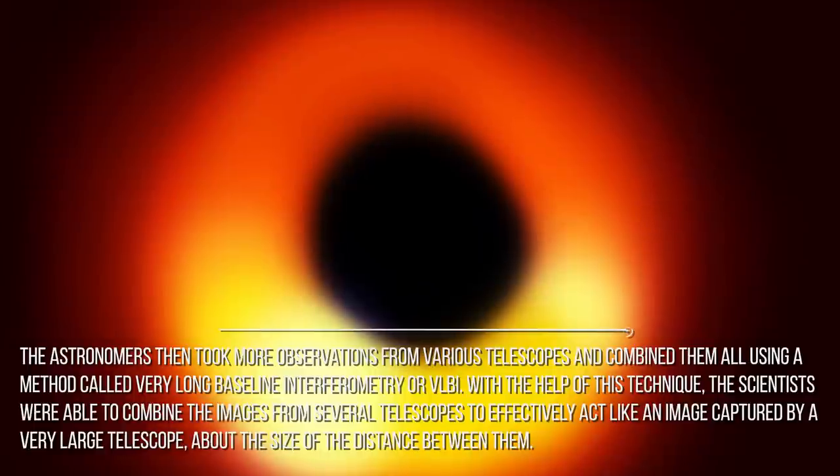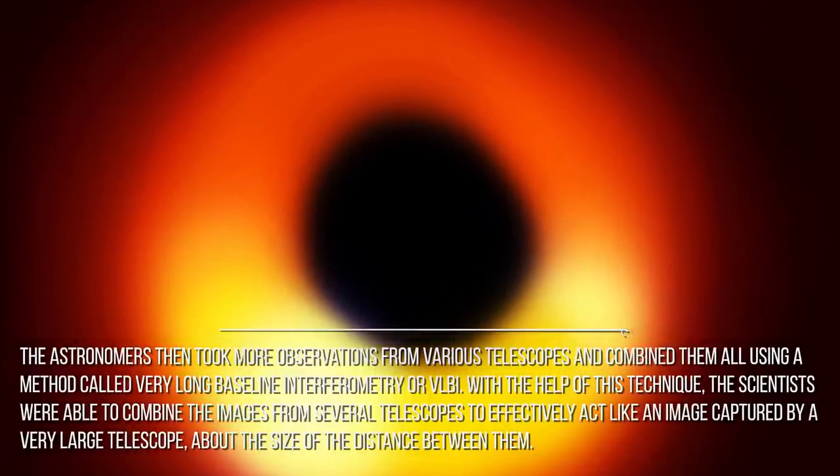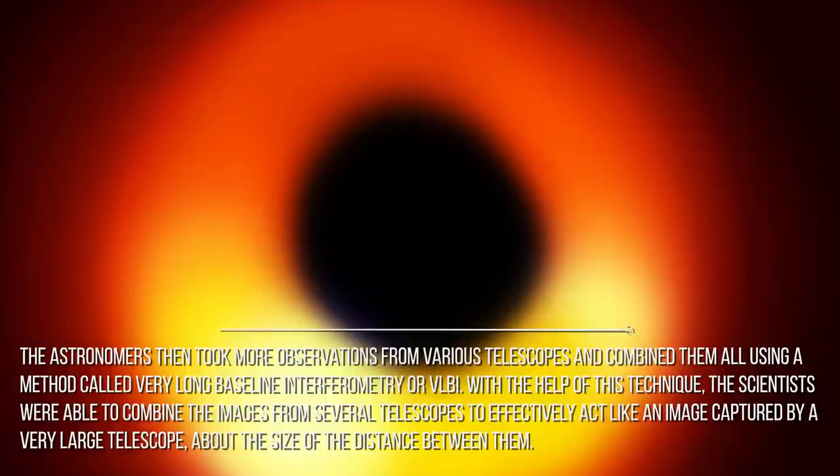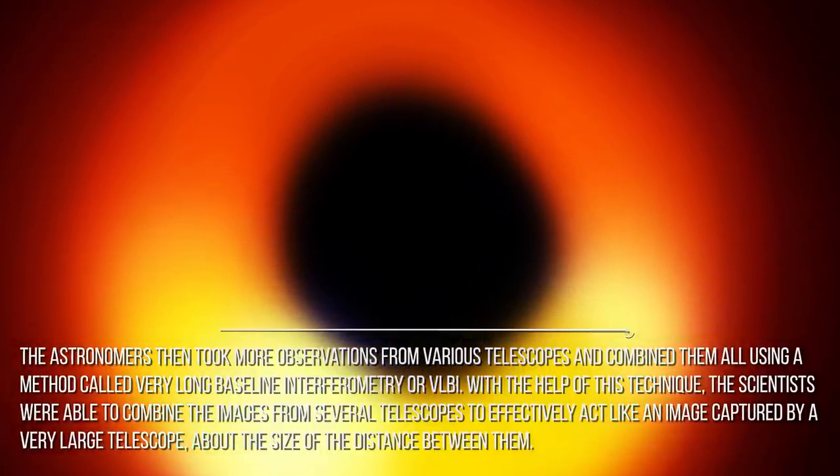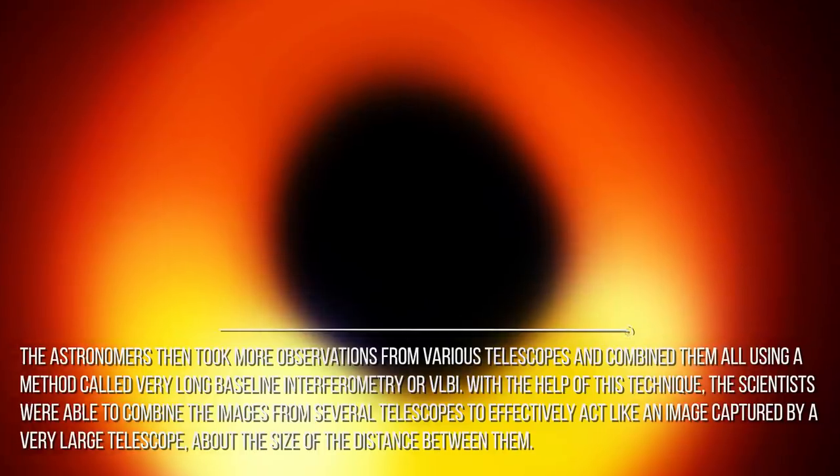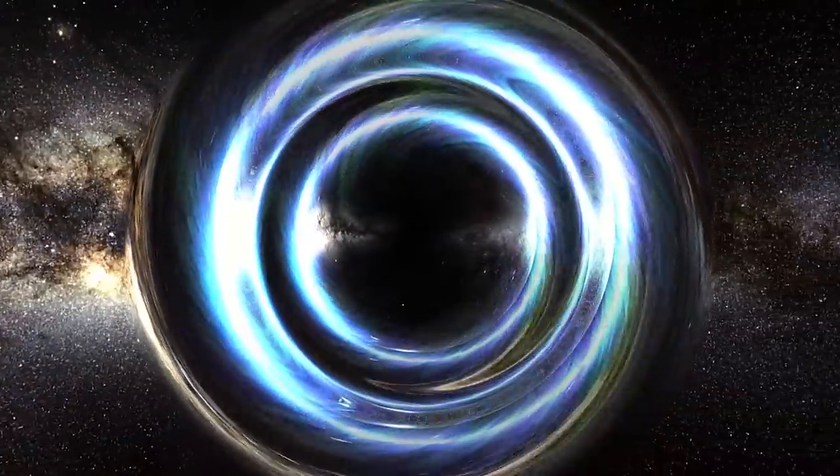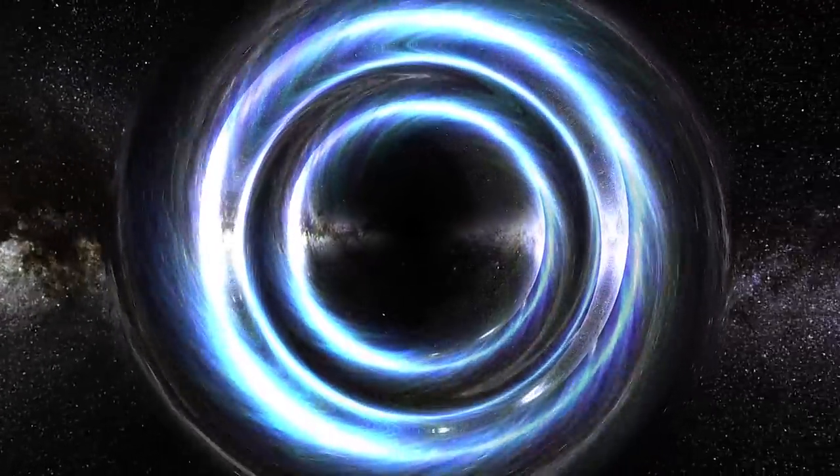With the help of this technique, the scientists were able to combine the images from several telescopes to effectively act like an image captured by a very large telescope, about the size of the distance between them. In this way, scientists were able to measure the precise velocity of the black hole.